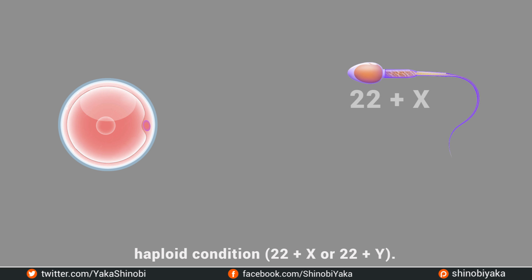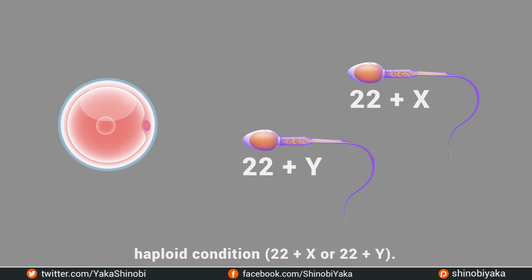Half the sperm will contain an X chromosome and the other half will contain a Y chromosome, so the sex of an offspring is determined by the male. The eggs of a female have 22+X chromosomes, and the male produces two types of sperm: one type has 22+X and the other a 22+Y composition. So for every 100 sperm, 50 will have a Y chromosome and 50 will have an X chromosome.